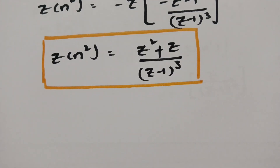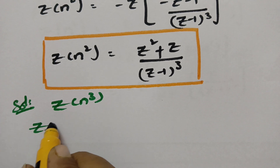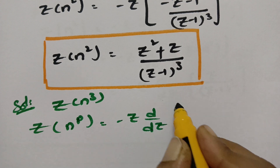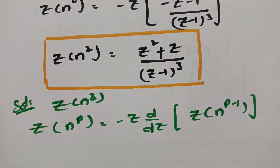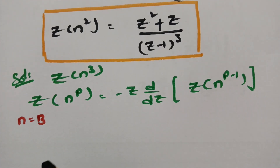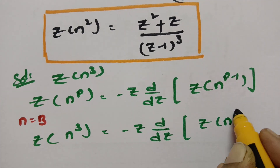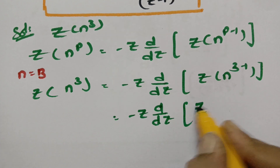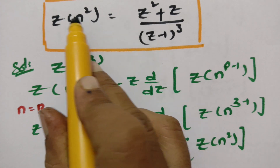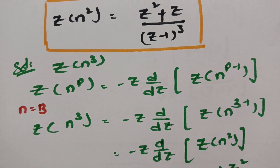The second solution is to find Z of n cube. We use the standard formula: Z of n to the power p equals minus z into d by dz of Z of n to the power p minus 1. Substituting p equal to 3, Z of n cube is equal to minus z into d by dz of Z of n square. We just found that Z of n square equals z plus z squared by z minus 1 whole cube.